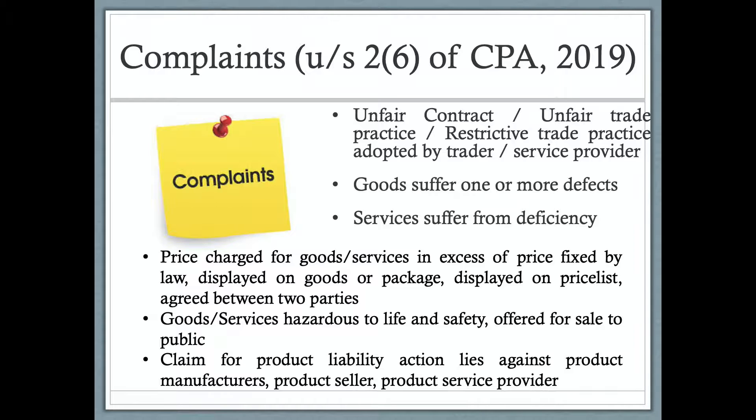Claim for product liability action lies against product manufacturers, product sellers, and product service providers. This means any injury caused by a product must also be compensated. A practical example: if someone buys a pressure cooker and it bursts, earlier the seller would only pay the value of the cooker, but now compensation for injury caused by the defective product is also covered.